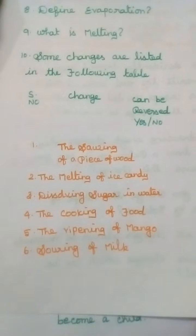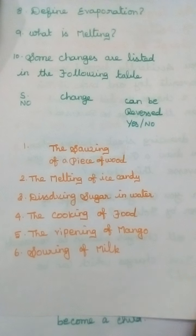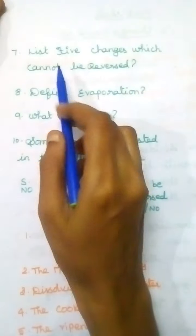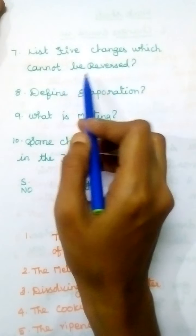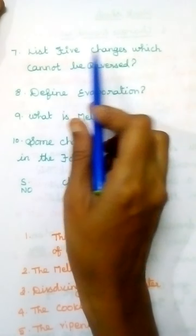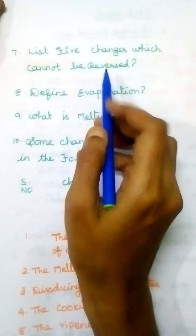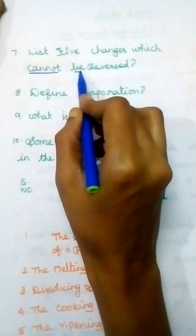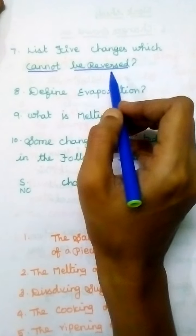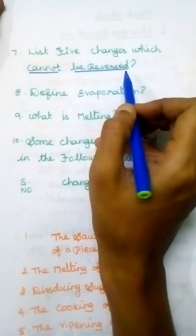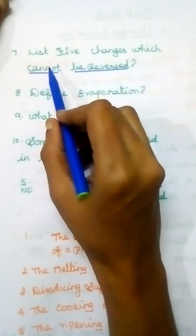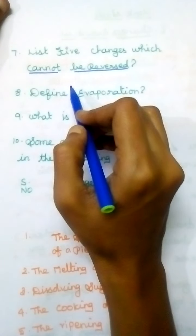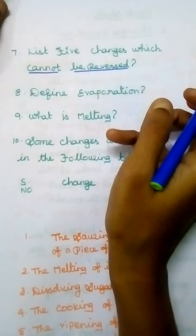Seventh question: List five changes which cannot be reversed. Which process is irreversible? Write the answers. Already I told you examples of irreversible changes. List five changes which cannot be reversed — irreversible changes.